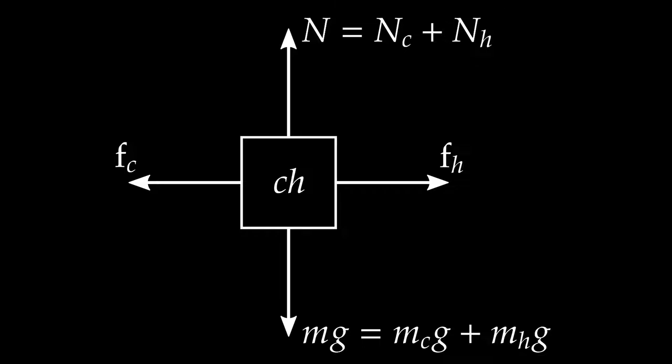Is anyone pushing or pulling on the cart-horse system? No — there would be a push-pull force if someone else had a rope attached, but there are no external push-pull forces acting on the combined system. Are there surfaces in contact? Yes — the cart and horse together sit on the road, so there's a normal force directed upward, which is the sum of the individual normal forces.